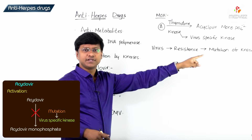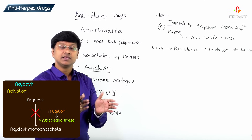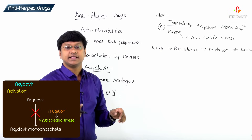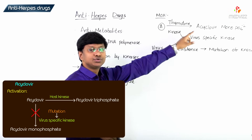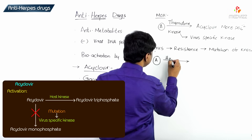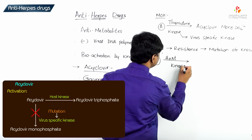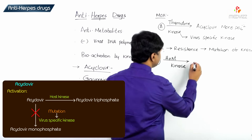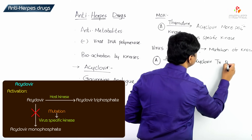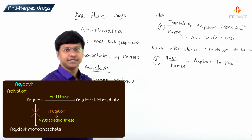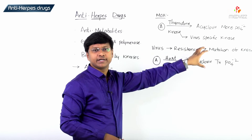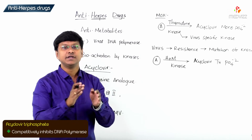Once there is mutation of the virus-specific kinase, the acyclovir still gets activated — but by host kinases instead. The host kinases convert acyclovir to acyclovir triphosphate. This product, acyclovir triphosphate, competitively inhibits the action of the viral DNA polymerase.